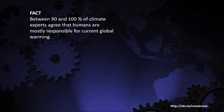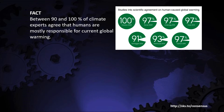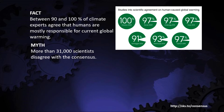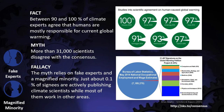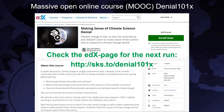Here is a simpler way to debunk this misinformation. Start with the fact that between 90 and 100 percent of climate experts agree that humans are mostly responsible for current global warming. Include a memorable graphic if you have one handy. Next, mention the myth about the 31,000 scientists who disagree with the consensus. Then explain the fallacy — this invokes fake experts and a magnified minority, because just about 0.1 percent of signees are actively publishing climate scientists, while most work in other fields.